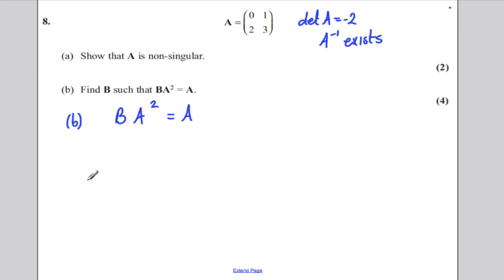There are different ways of doing this, but the easiest way is to think from part A, you know A inverse exists. So BA squared actually means BAA, which equals A.